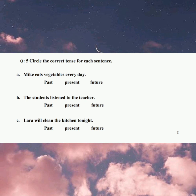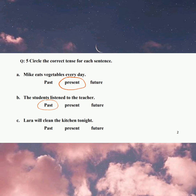Mike eats vegetables every day. 'Eats' is the verb — it has an S, so the verb is in the present. Circle it. The students listened to the teacher. 'Listened' is the verb — it has -ED, so it is in past simple tense. Circle it. And that was your worksheet. Thank you. Have a good day.